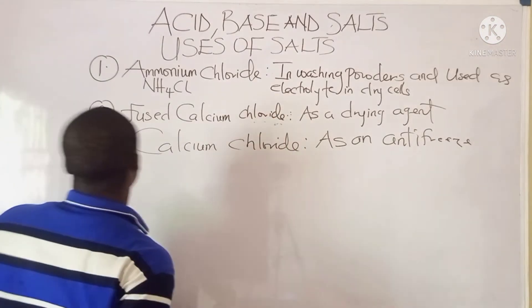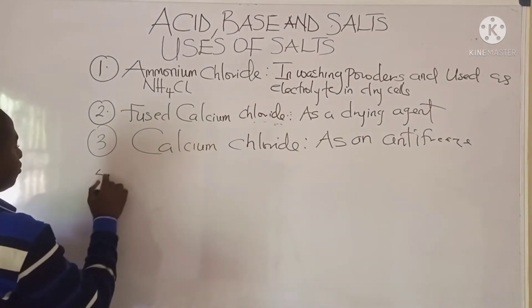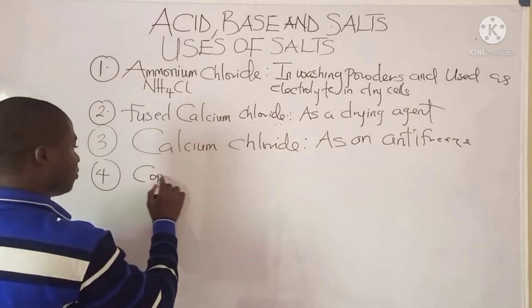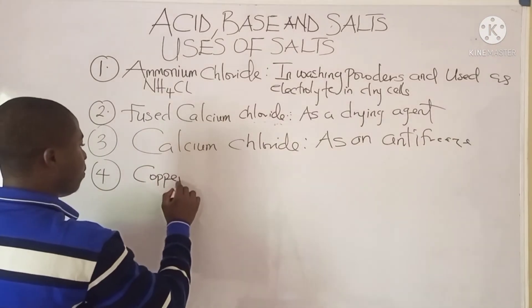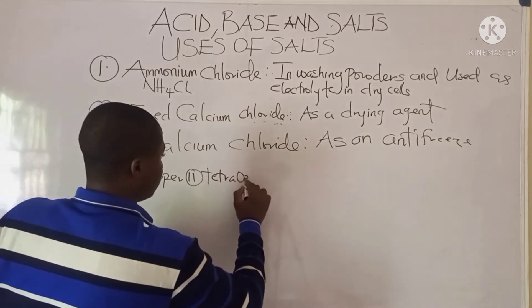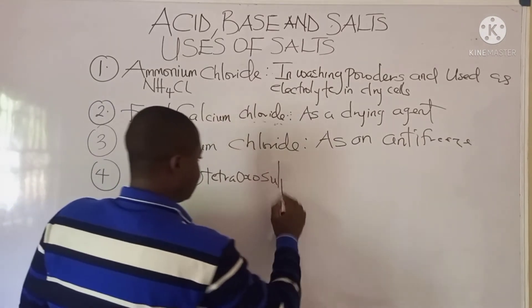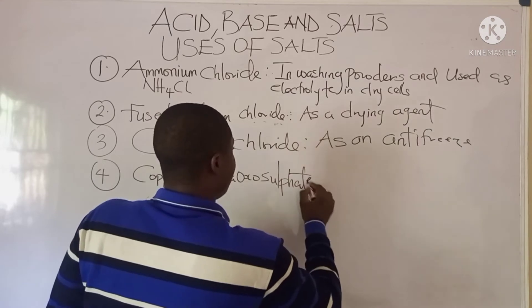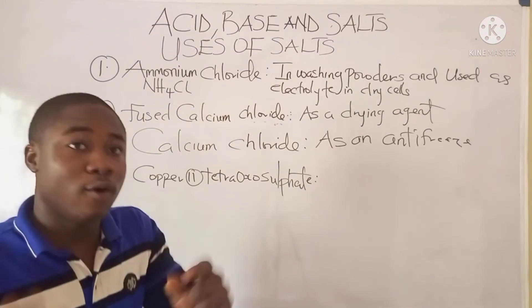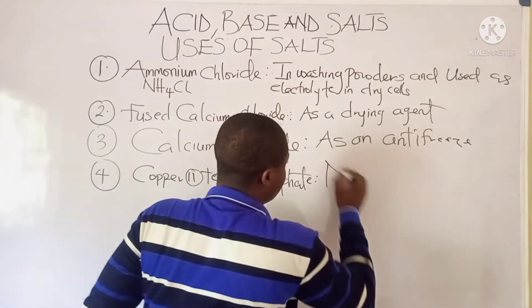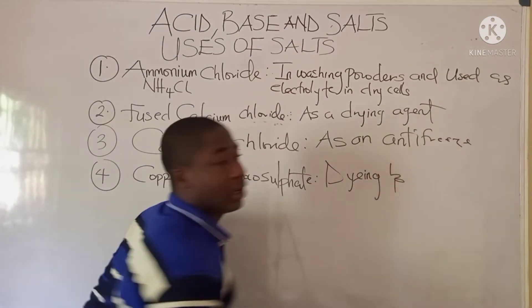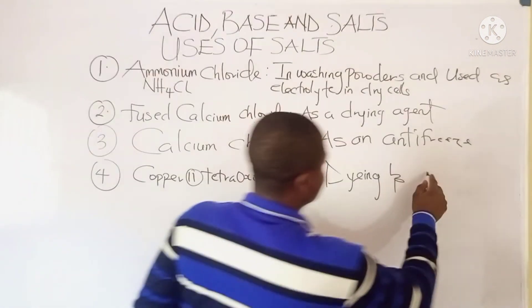Talking about copper(II) tetraoxosulfate — this compound is used for dying and is also used during calico printing.